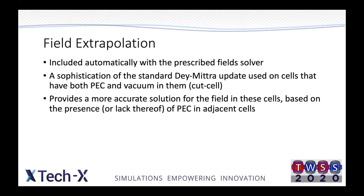Combined with our prescribed field solver is what we call field extrapolation. If you're using the prescribed field solver, it's automatically included — there's nothing you have to do to enable it. Basically, it's a sophistication of the standard Yee update used on cells that have both a PEC and vacuum in them, referred to as a cut cell. It looks at the cells around it to see how many other cut cells and full PEC cells are around it, enabling a more accurate field solution in those cells.